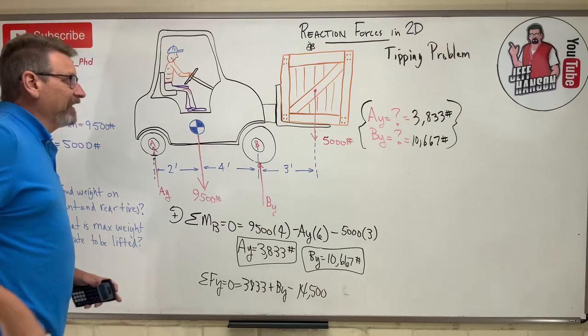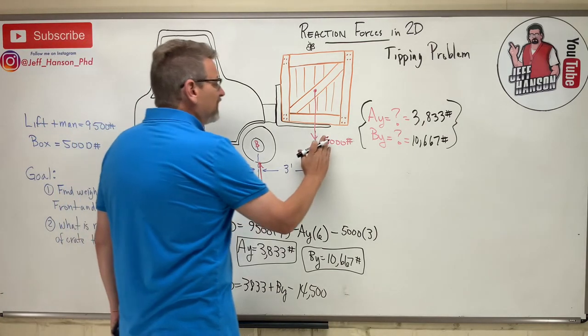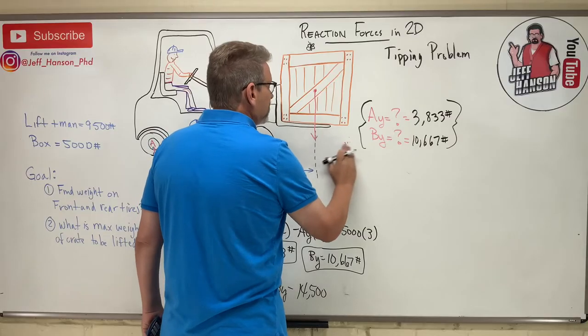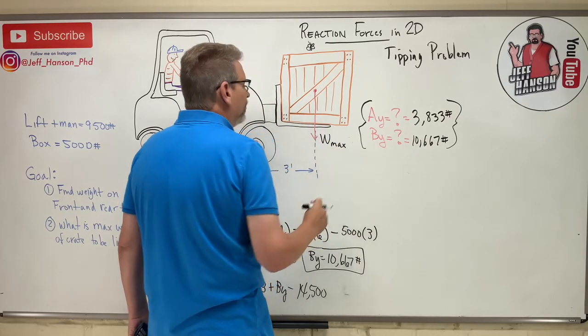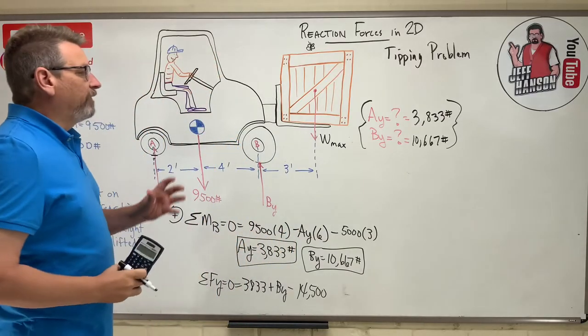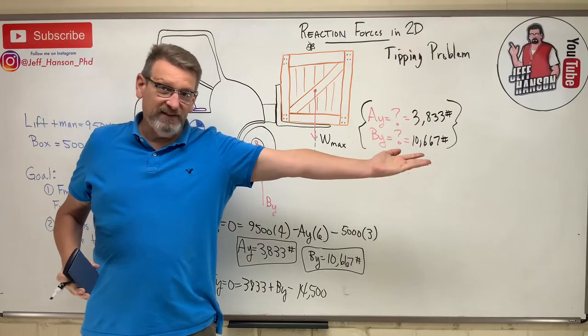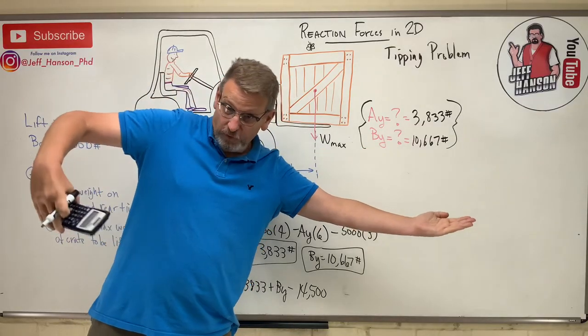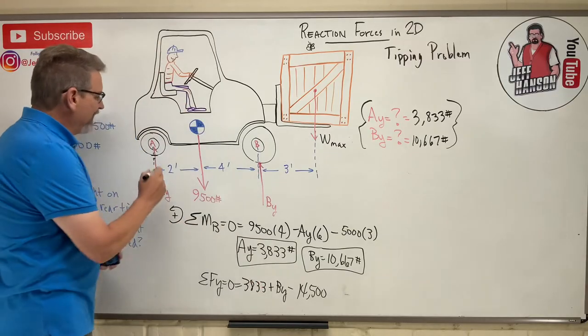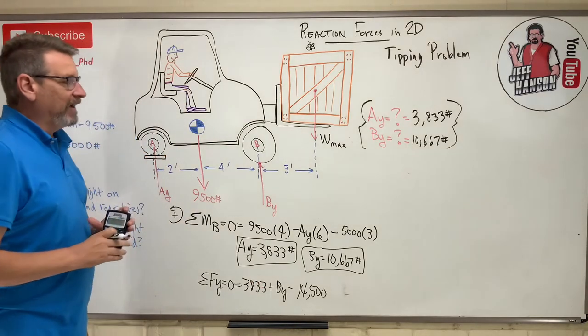So part two says what is the max weight that can be lifted? Now this is the part where you got to be thinking. Okay, so let's get rid of the 5,000. See you later, alligator. Wmax. Okay, now think about the very maximum. Okay, so if I'm the forklift at the point where I can't hold anymore, right? What's happening to this foot over here?